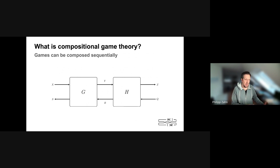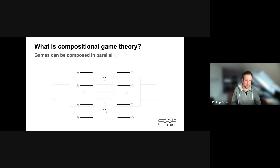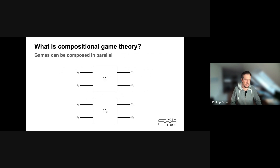If you have a basic game or several games, you can compose them in two ways: sequentially — game G happens first, then game H happens second — or in parallel, where game G1 and game G2 happen simultaneously, and you can plug them together as happening at the same time.